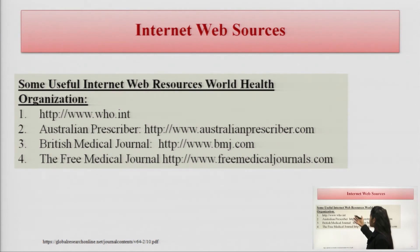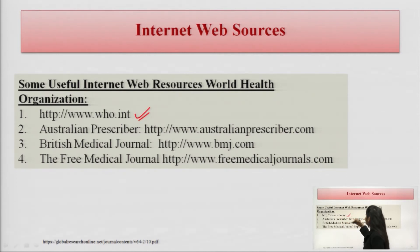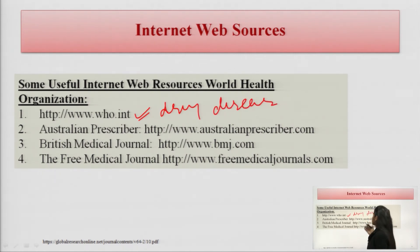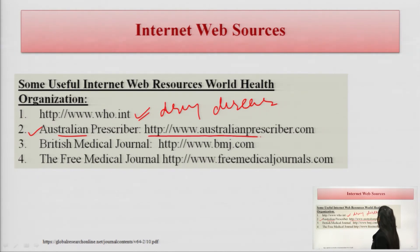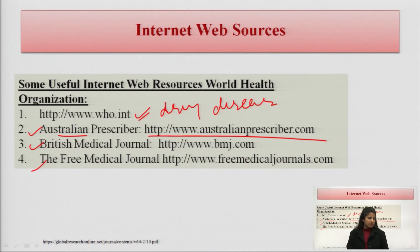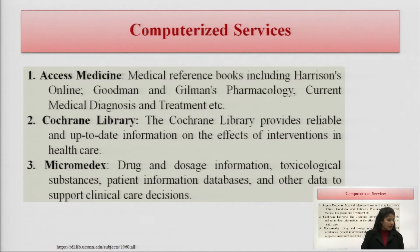Internet web sources include sites such as www.who.int, which provides information about drugs, diseases, disease demography, treatment strategies, and every aspect of a particular disease. Another example is the Australian Prescriber at www.australianprescriber.com. These are examples of reliable web pages used for drug information.